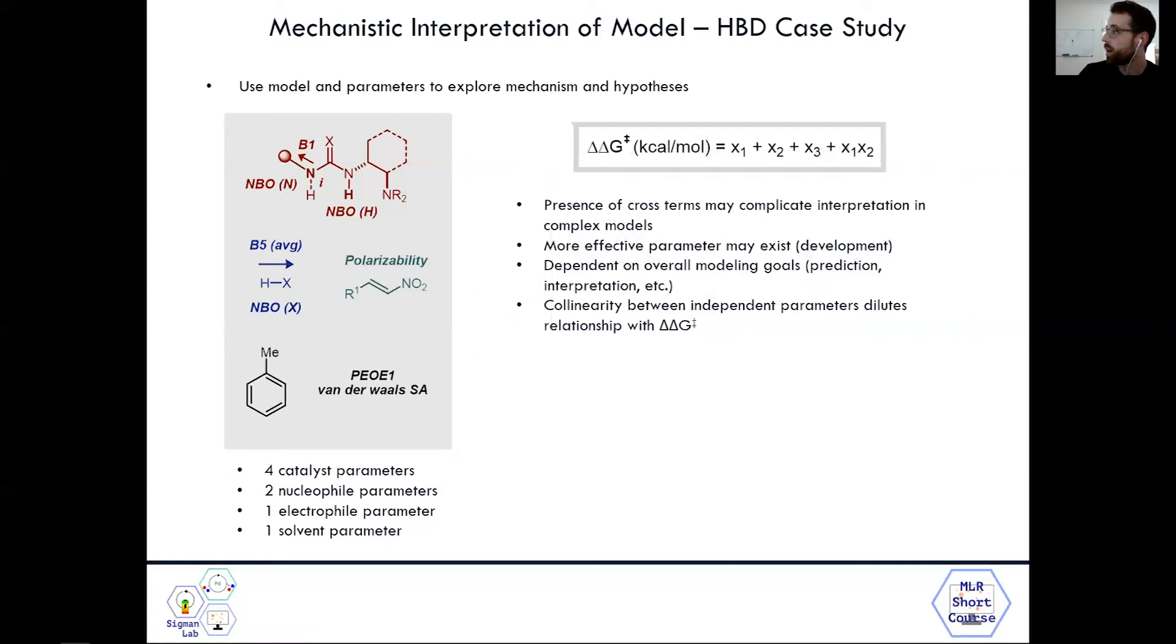We've covered a quick example of how to deconstruct your model and think about different trends and comparisons between parameters. A few other notes I'd like to touch on: if you have a good sense of the modeling process, you can understand how cross-terms may complicate the interpretation of these complex models, especially when we have six to eight parameters. When it comes to interpretation, it's really hard to understand what contribution each of those terms is representing. Furthermore, if you have a cross-term in a good model, maybe there's a more effective parameter that exists that you can develop that would take the place of the cross-term and be a more robust parameter to use.